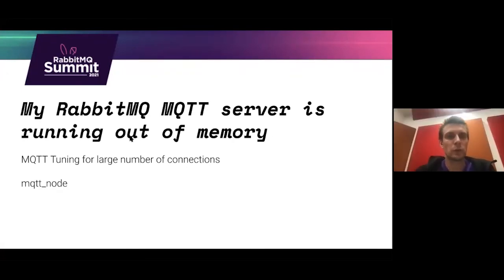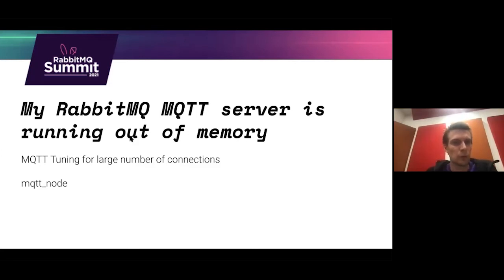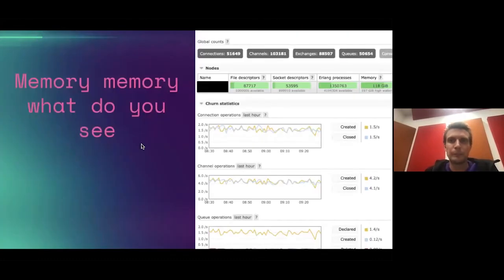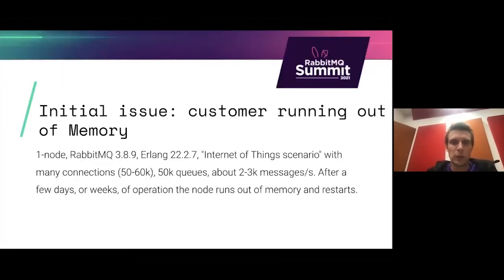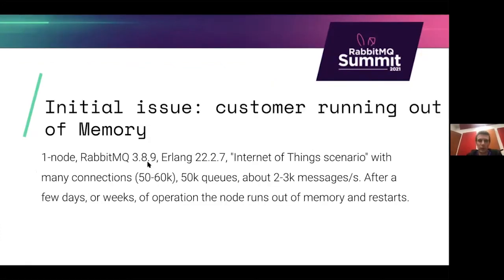The next case: a customer was using the MQTT plugin and it was eating all of the memory. It involves tuning for a large number of connections and a special look at a subsystem called MQTT node. The initial issue was on RabbitMQ 3.8.9 with 50,000 to 60,000 connections, 50,000 queues, but a pretty low throughput of 2,000 to 3,000 messages per second, and they had been running out of memory repeatedly.